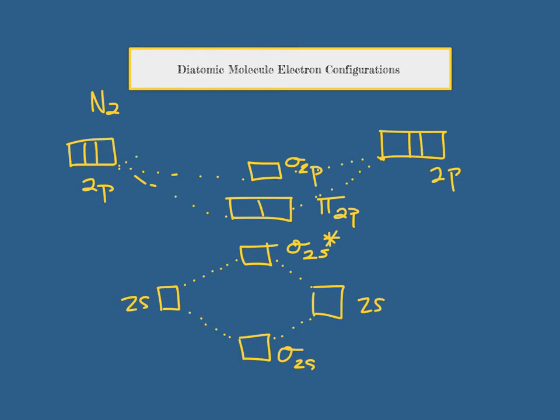Above that are the antibonding orbitals for those pi's. And on top of that, the antibonding orbital for the sigma.